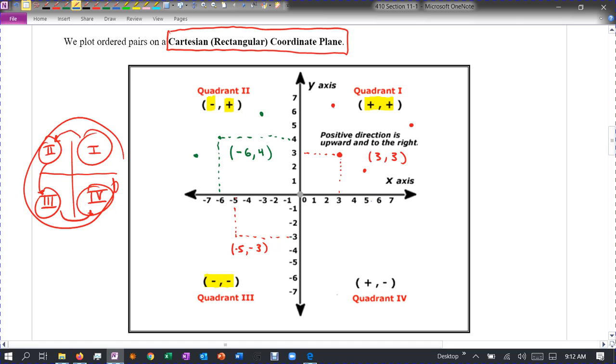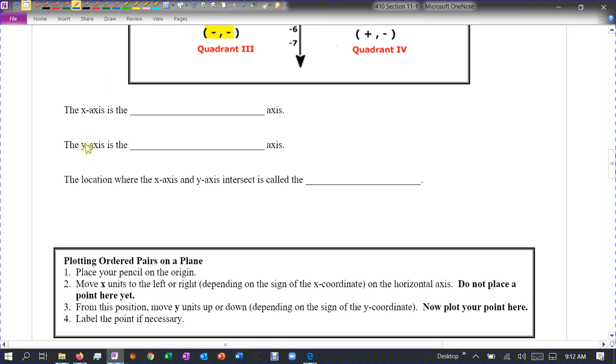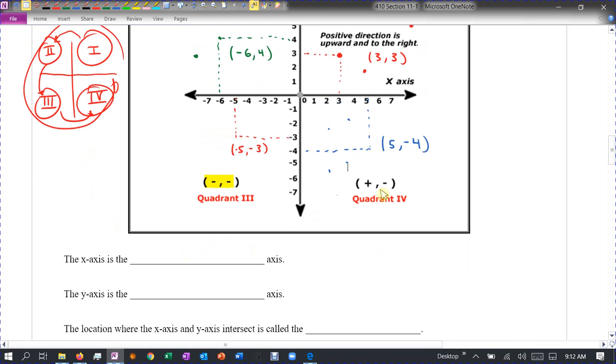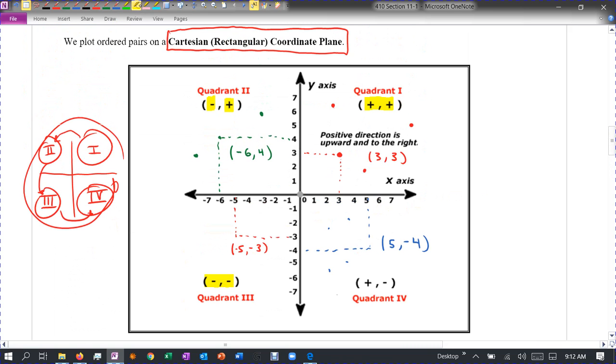And then if I were to pick a point, let's say over here, that would be the point five, negative four. Any point that I pick over here in the fourth quadrant, you would have a positive X coordinate and a negative Y coordinate.